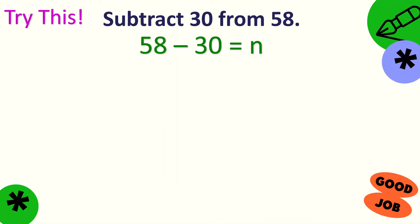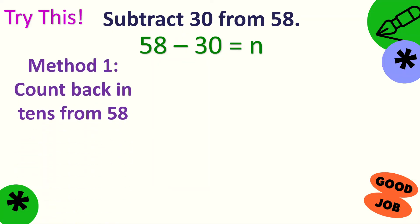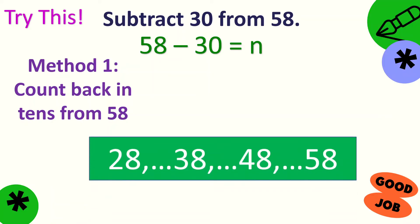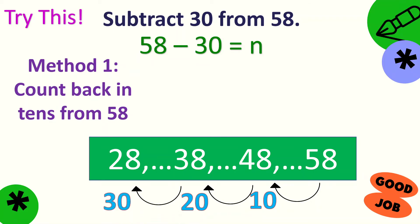Let's use the first method — count back in tens from 58. 58 minus 10 is 48, then minus 10 is 38, and one more minus 10 is 28. So, 58 minus 30, children, is equal to 28.